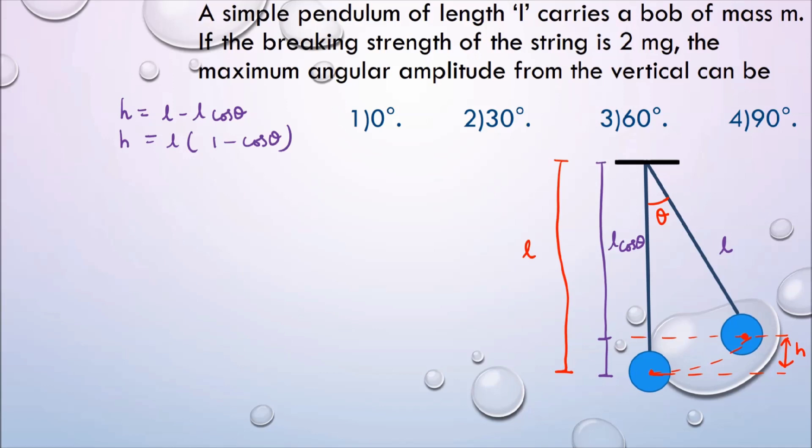Because the bob is raised by a height h, it gains potential energy. And what is formula for potential energy? m g into h. Here h is equal to L(1 minus cos θ). When the bob is initially at a height h and released, the potential energy gets converted into kinetic energy. And when it reaches to the bottom most point, that kinetic energy is going to be the maximum.